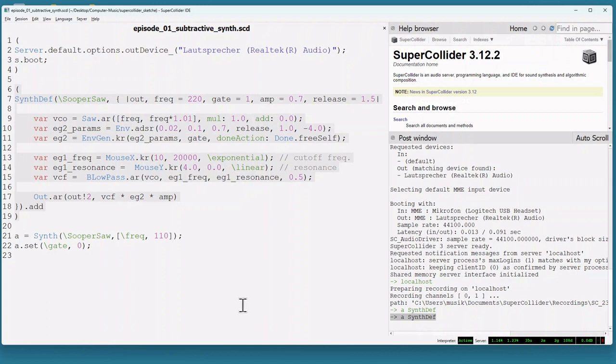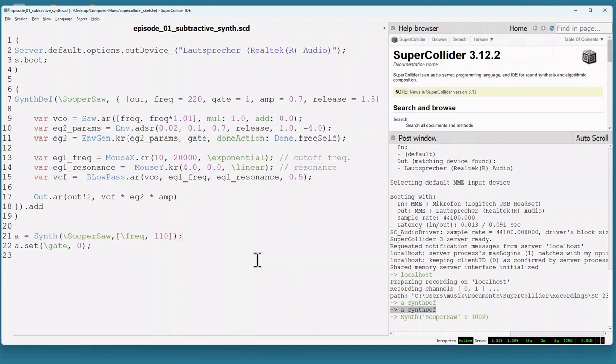Here, a SynthDef is generated and now I can create a version of the Synth, an instance of the Synth, by simply saying Synth SuperSaw. And I can also set some parameters. In this case, I set the frequency to 110 Hz. So, let's start that.